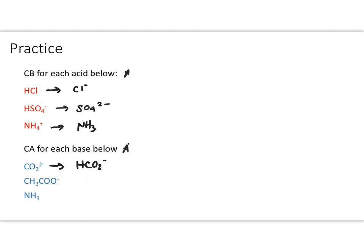In this example, we're going to pick up a proton. The acetate ion is going to pick up a proton and give us acetic acid. And of course, in the case of NH3, we're going to go to the ammonium ion.